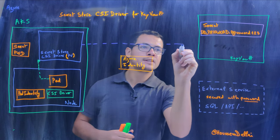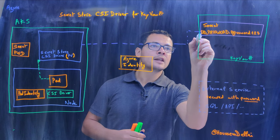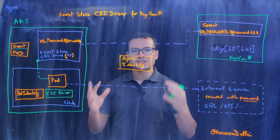SecretStore CSI driver for Key Vault is used in Azure Kubernetes Service (AKS) in order to secure secrets.